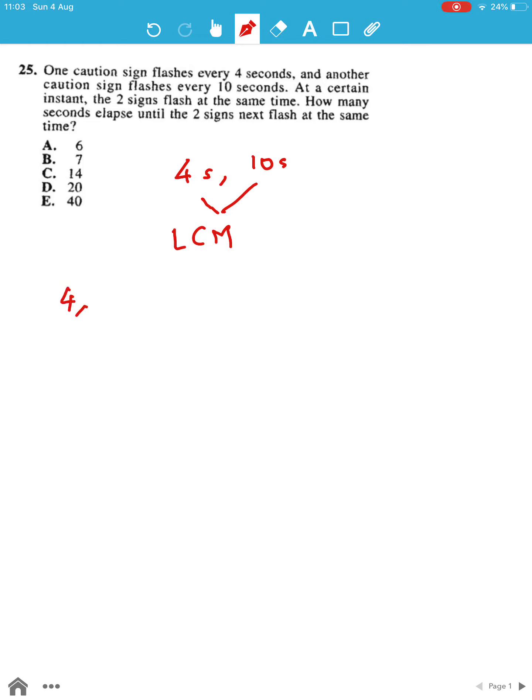The LCM for 4 and 10 is 20. In the question, they've mentioned that at one instance the two signals flash at the same time, which will be at 20 seconds. How many seconds elapse until the two signs next flash at the same time?